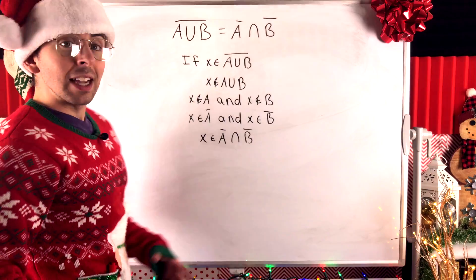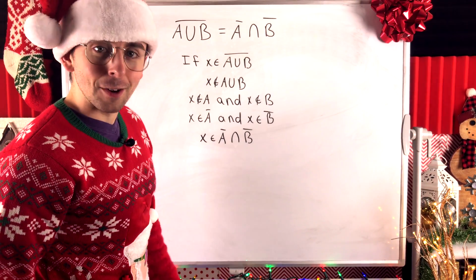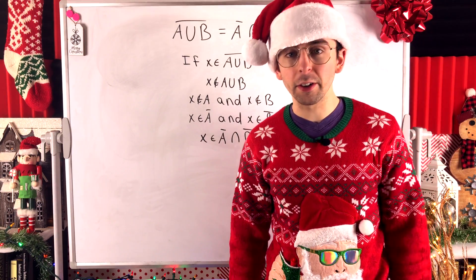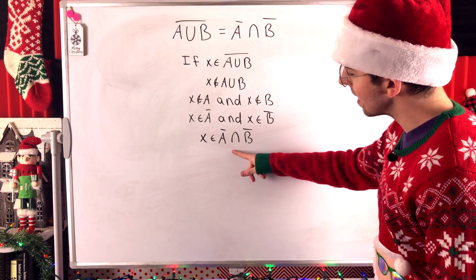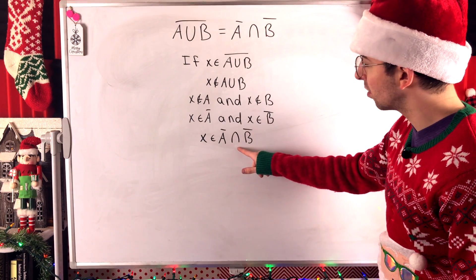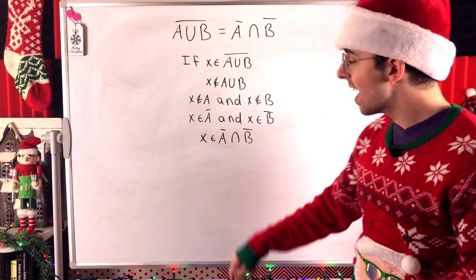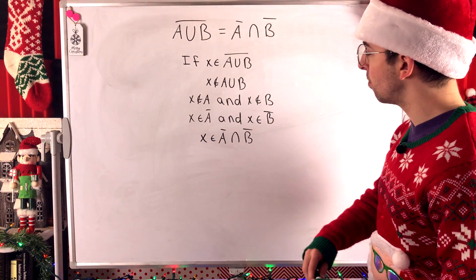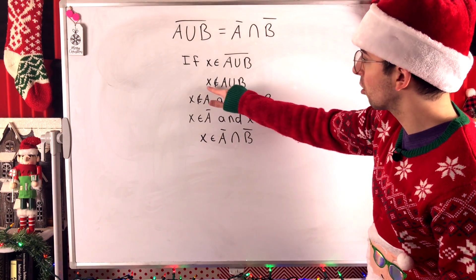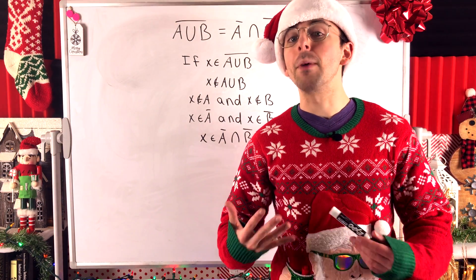All that remains is to show that A complement intersect B complement is a subset of the complement of A union B. We can do that using these same steps in reverse order. If x is an element of A complement intersect B complement, by definition of set intersection, x is an element of A complement and x is an element of B complement. By definition of set complement, that means x is not an element of A and x is not an element of B. By definition of set union, since x isn't in A and isn't in B, x can't be in their union — so x is not an element of A union B. Thus, x is an element of the complement of A union B, by definition of set complement.